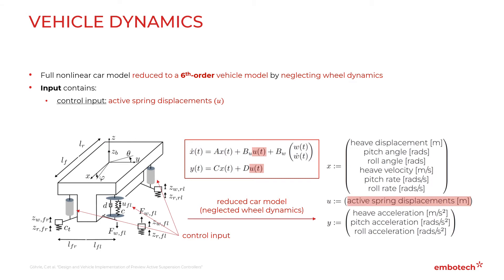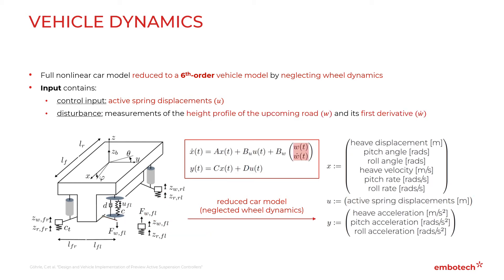The system input contains four control inputs denoting the active spring displacement at each wheel, and the disturbance comprised of the measurements of the height profile of the upcoming road and its first derivative. Finally, the system outputs are the second-order derivatives of the first three states — that is, heave, pitch, and roll acceleration.